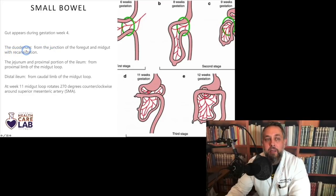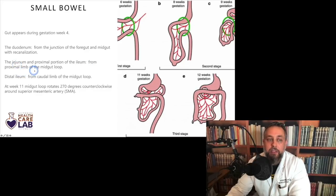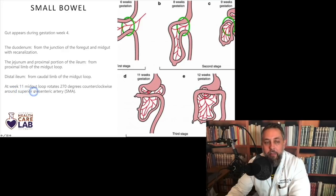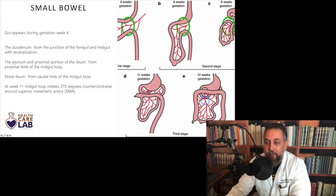The duodenum comes from the junction of the foregut and the midgut, and it appears with re-canalization — the area opens up. The jejunum and proximal portion of the ileum derive from the proximal limb of the midgut loop. The distal ileum comes from the caudal limb of the midgut loop. At week 11, the midgut loop rotates 270 degrees counterclockwise around the superior mesenteric artery. If all goes well, you end up with the familiar position where everything sits in its final version.